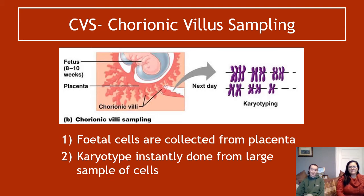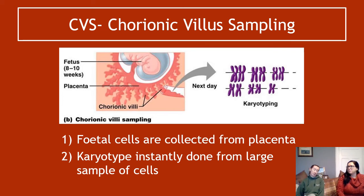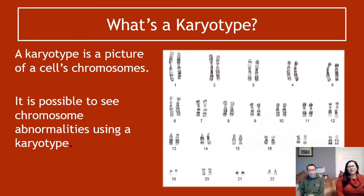A karyotype is instantly done from CVS because it comes from a large sample of cells — slightly different from amniocentesis, where the karyotype is done after cells are cultured. For CVS it's very, very quick — it can be within a day or less, depending on the lab.